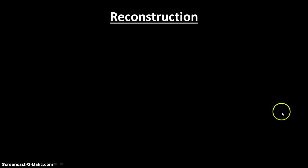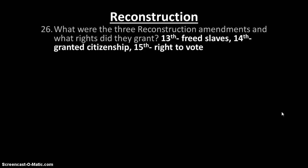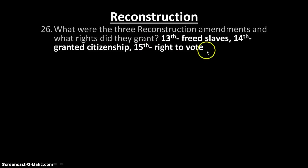Reconstruction — our last thing here. What were the three Reconstruction Amendments and what rights did they grant? The 13th Amendment freed the slaves. The 14th Amendment granted citizenship to everyone born in the United States. And the 15th Amendment granted the right to vote to all men age 21 or older. So women — another 50 years, baby.